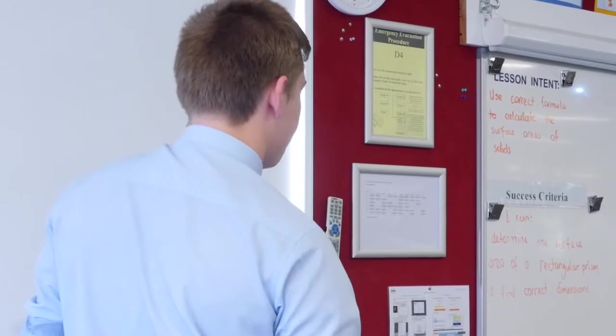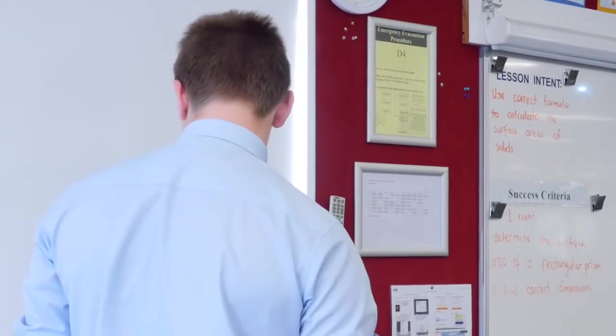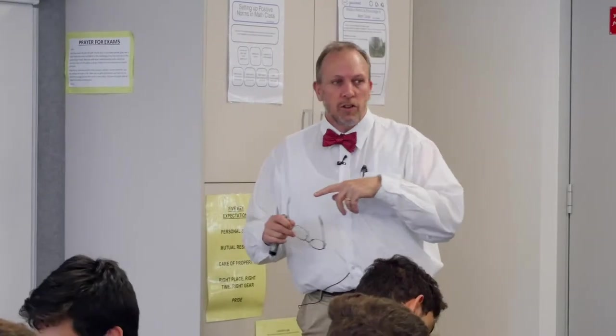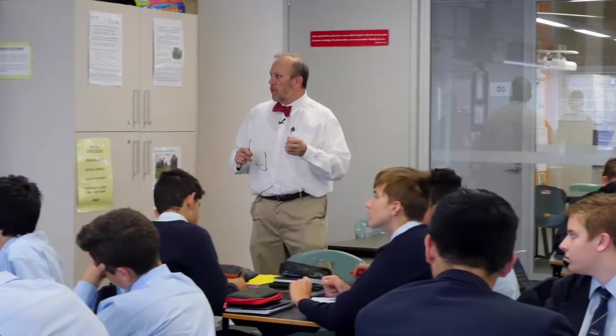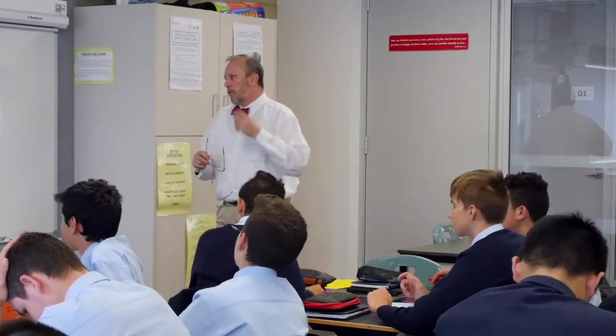Okay, so easy one to start off with. Area of a rectangle, make sure our calculations are correct. Yep, 322 square meters. What about the next one?